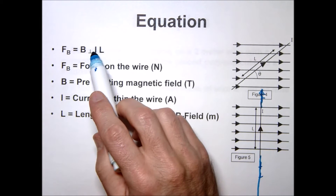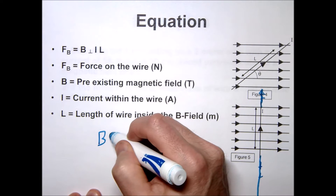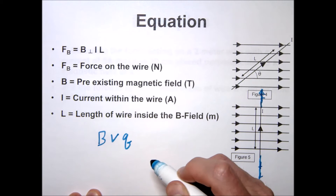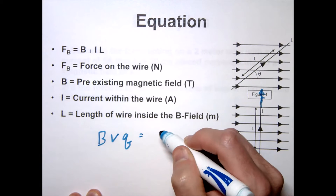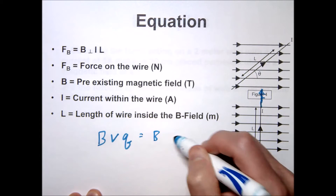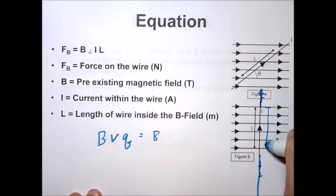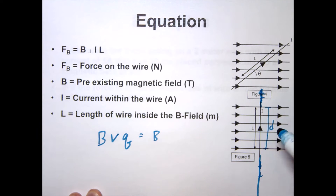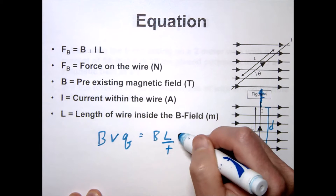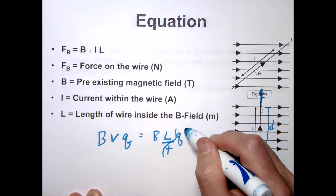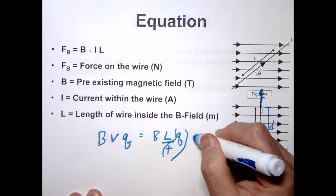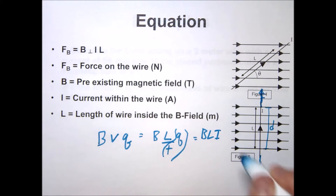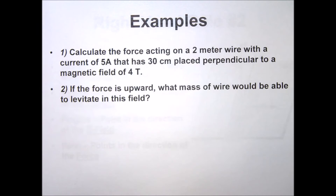This equation comes from our last equation. Remember F = BvQ — but velocity is just distance over time, and in this case that distance is the length L. So we can write it as (L/t) × Q. And Q over t is simply current, so we get that same equation F = BIL.